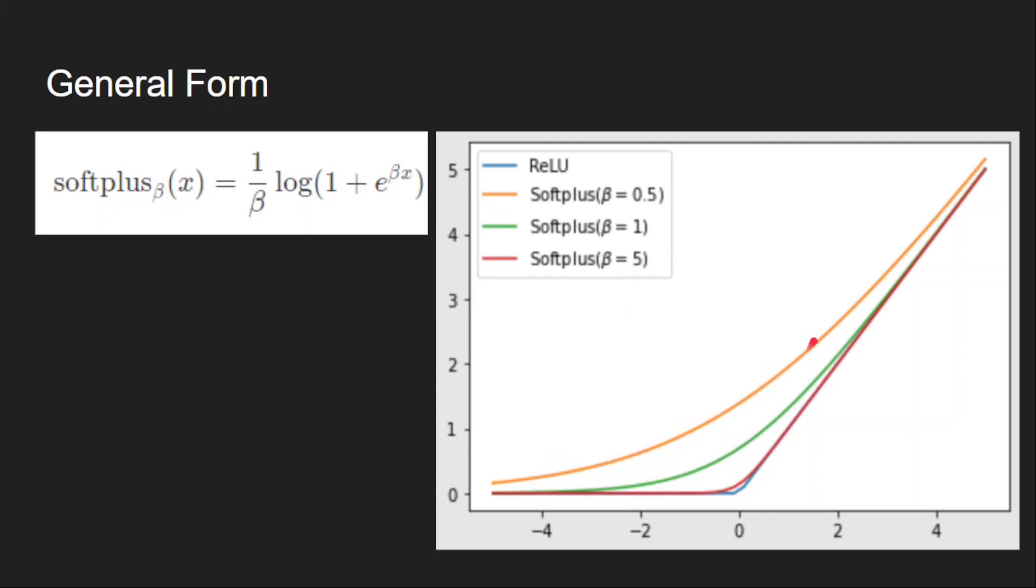If beta is less than one, it becomes almost linear. If beta is greater than one, it becomes more like ReLU and the smoothness decreases around zero. But in general we don't use any parameter in softplus.